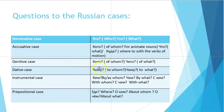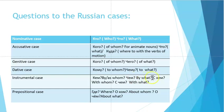For the genitive case we have two questions: 'кого' (of whom) and 'чего' (of what). For the dative case: 'кому' (to whom) and 'чему' (to what). For the instrumental case: 'кем' (by/as whom) and 'чем' (by what), with additional questions 'с кем' (with whom) and 'с чем' (with what).